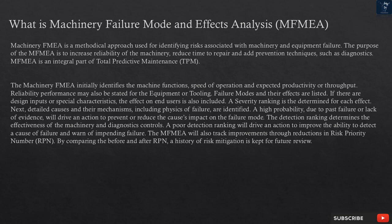The detection ranking determines the effectiveness of the machinery and diagnostics controls. A poor detection ranking will drive an action to improve the ability to detect a cause of failure and warn of impending failure. The MFMEA will also track improvements through reductions in Risk Priority Number (RPN). By comparing the before and after RPN, a history of risk mitigation is kept for future review.